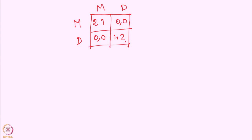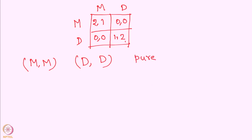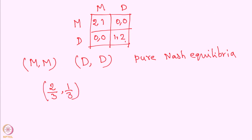Let us look at this game. As we noticed earlier, this game has two pure Nash equilibria: both choosing MM is a pure Nash equilibrium, and both choosing DD is also a pure Nash equilibrium. Apart from this, there is also a mixed Nash equilibrium. In the mixed Nash equilibrium, player 1 plays M with probability 2/3 and D with probability 1/3, and player 2 plays M with probability 1/3 and D with probability 2/3.